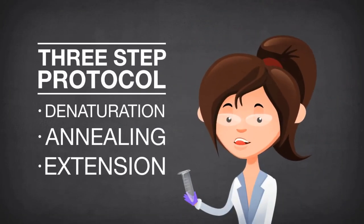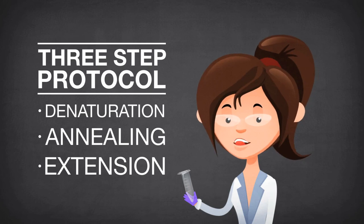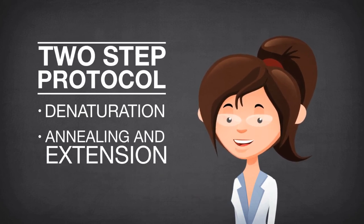In some cases, the annealing and extension steps can be combined. This is known as a two-step cycling protocol.